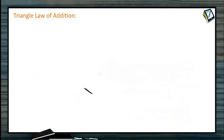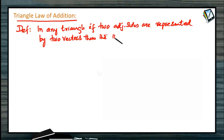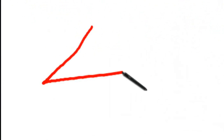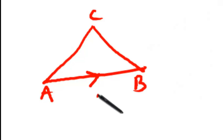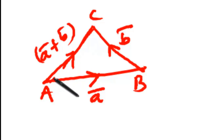Vector addition is based on two formulae. The first is the triangle law of addition. In any triangle, if two adjacent sides are represented by two vectors, then the third side represents the sum or resultant vector of the two vectors when its direction is reversed. Suppose there is a triangle ABC where AB̄ is represented by Ā and BC̄ is represented by B̄; then AC̄ will represent their resultant. The third side represents the resultant when its direction is reversed.